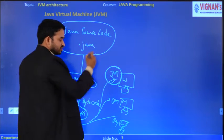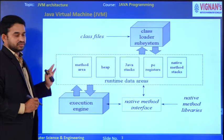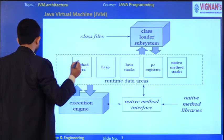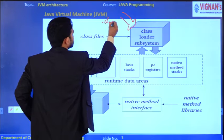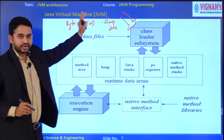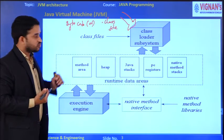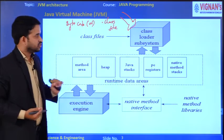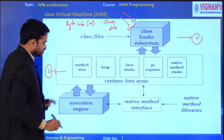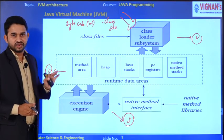The entire JVM is divided into three parts. Part one is the class loader subsystem. Part two is the memory area. Part three is the execution engine. Internally, JVM processes the .class file through these three steps and produces the executed output.